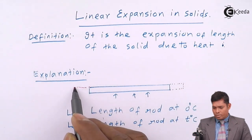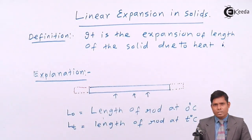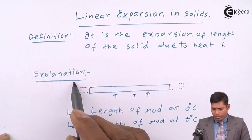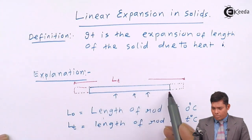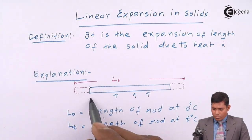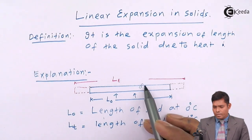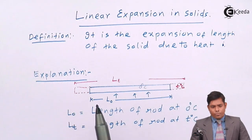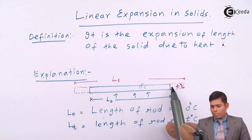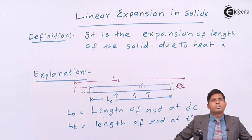The increase in length is visible: the original length was L0, and a small amount of extension occurs on both sides of the rod. The final length is LT — from end to end. The length L0 corresponds to 0 degrees centigrade, and LT corresponds to T degrees centigrade. The difference LT minus L0 is the amount of expansion that has occurred.